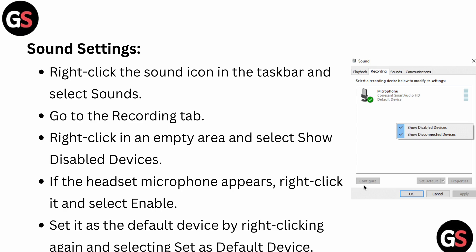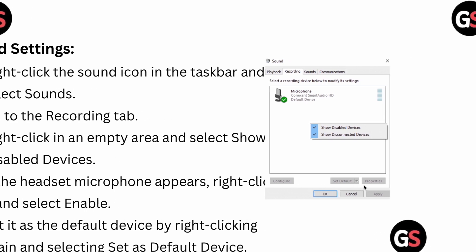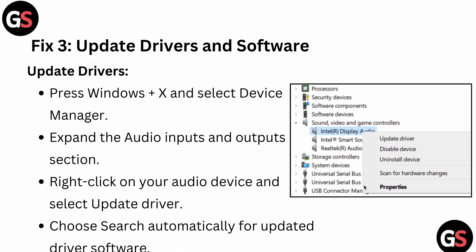For sound settings, right-click the sound icon in the taskbar and select Sound. Go to the Recording tab, then right-click in an empty area and select 'Show Disabled Devices.' If the headset microphone appears, right-click it and select Enable. Then set it as the default device by right-clicking again and selecting 'Set as Default Device.'